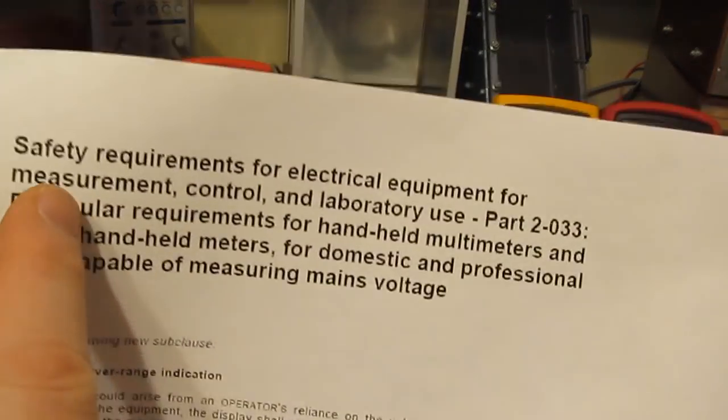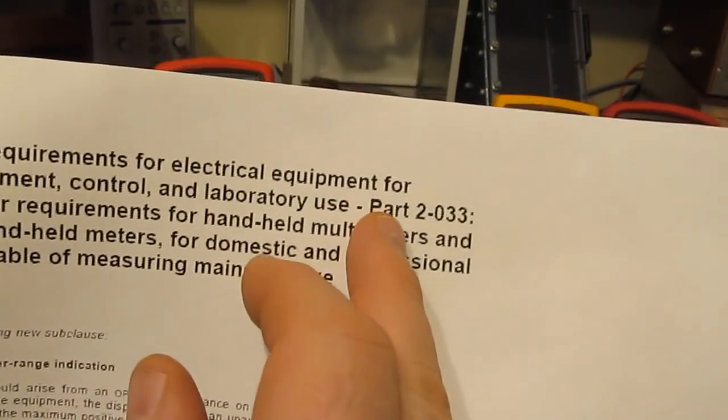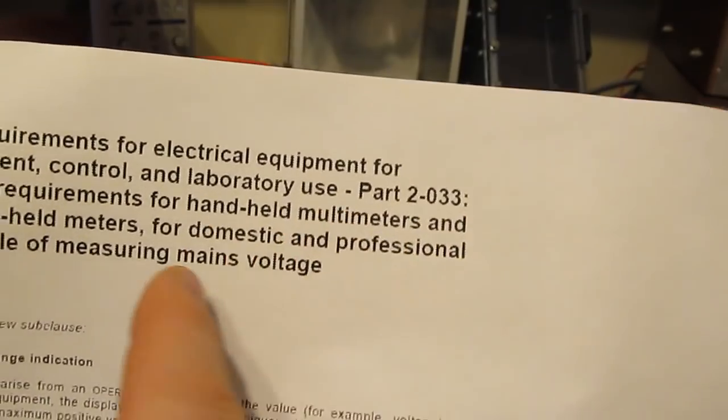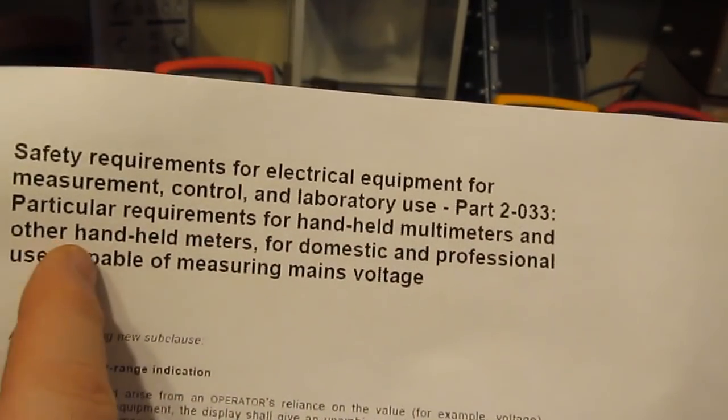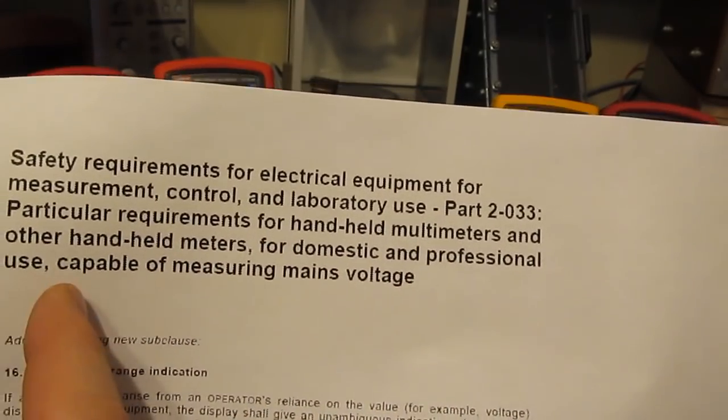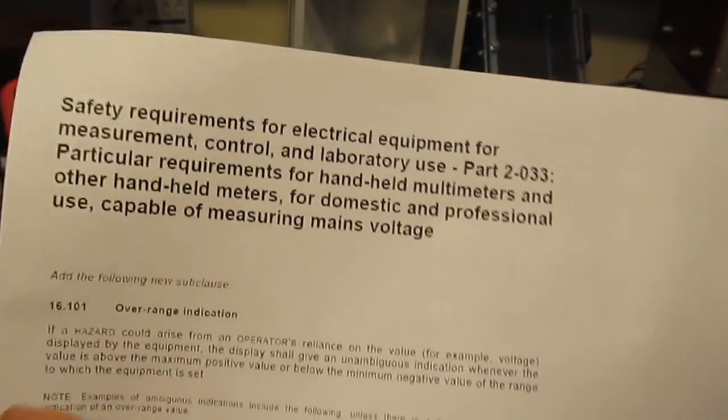This is looking at 61010, again this is part 2-033. This is particular requirements for handheld multimeters and other handheld meters for domestic and professional use capable of measuring mains voltage.